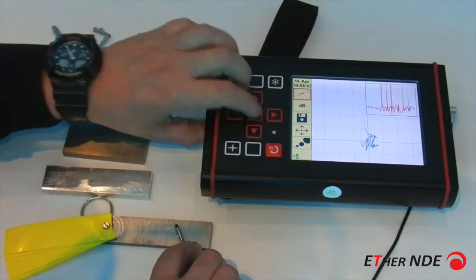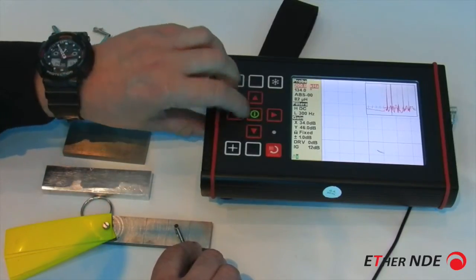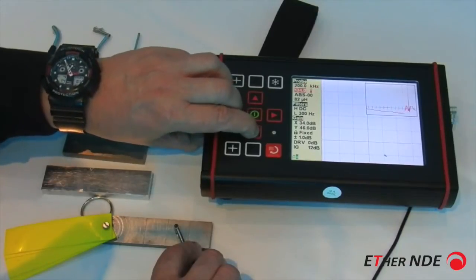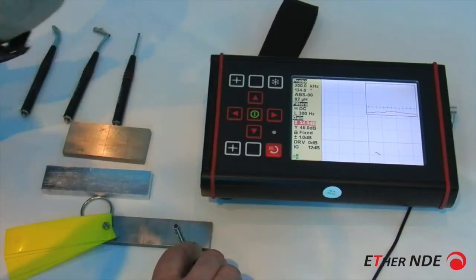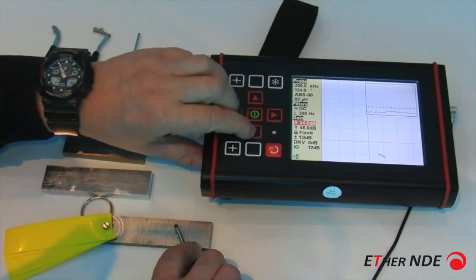but we've got far too much gain, so easiest to go into the quick menu, and the gain currently is 34 and 46, so there's 12 dB more gain vertically than horizontal.